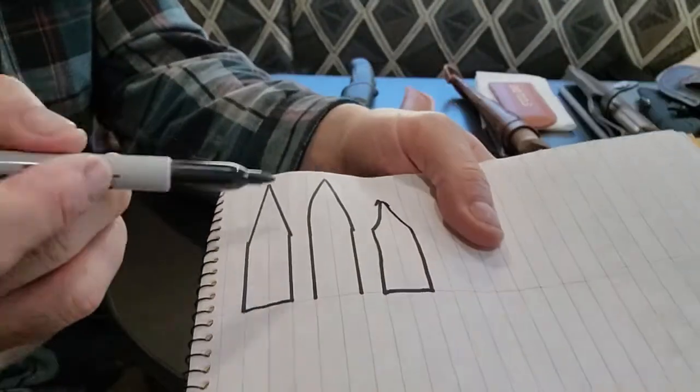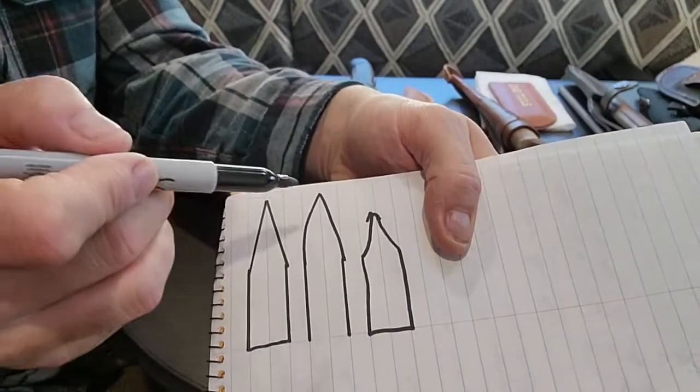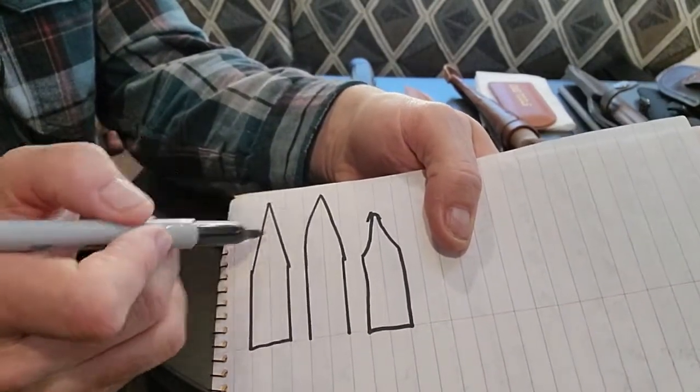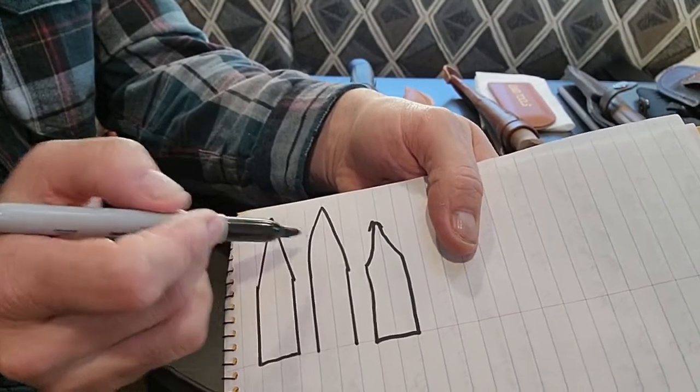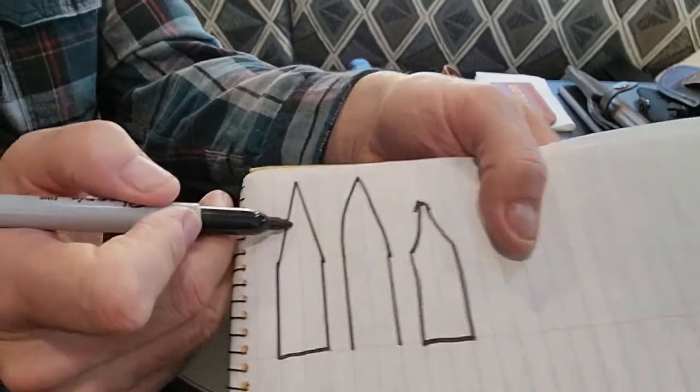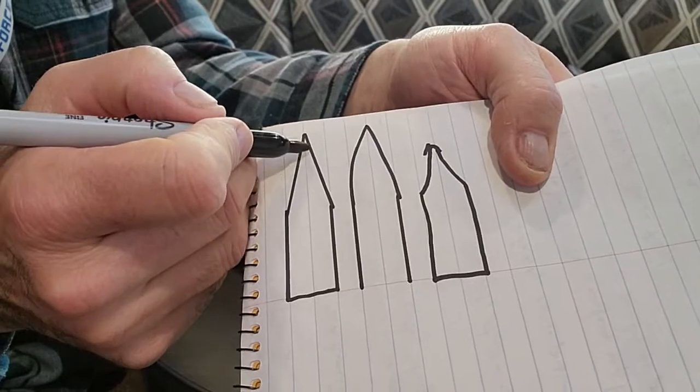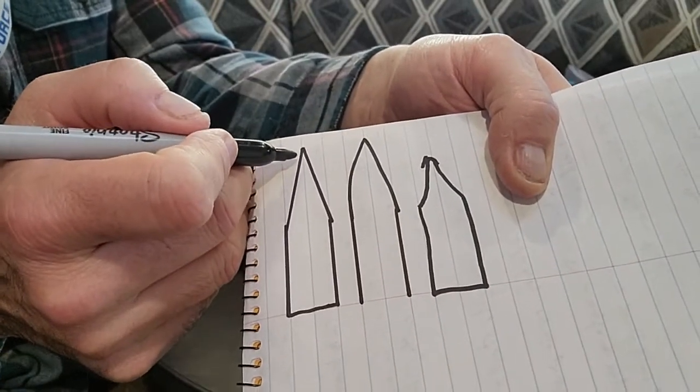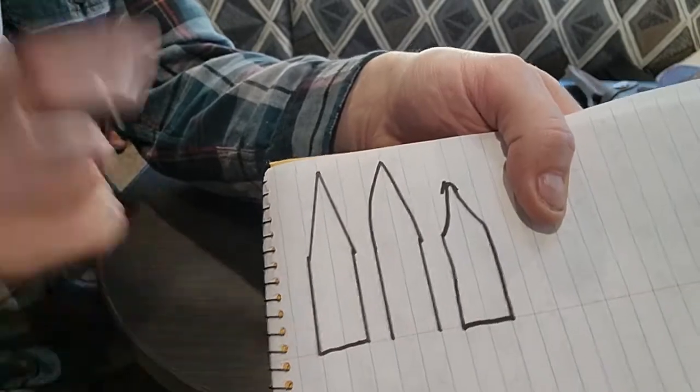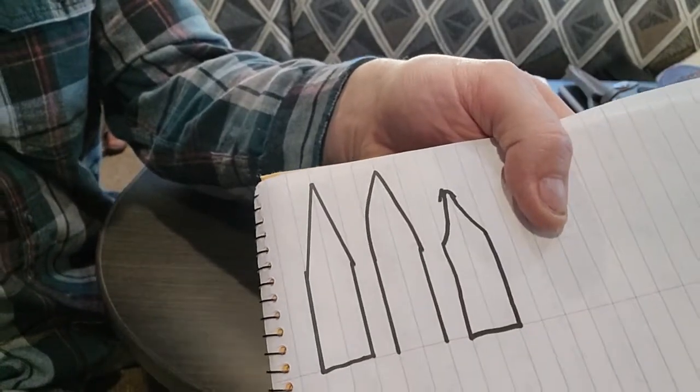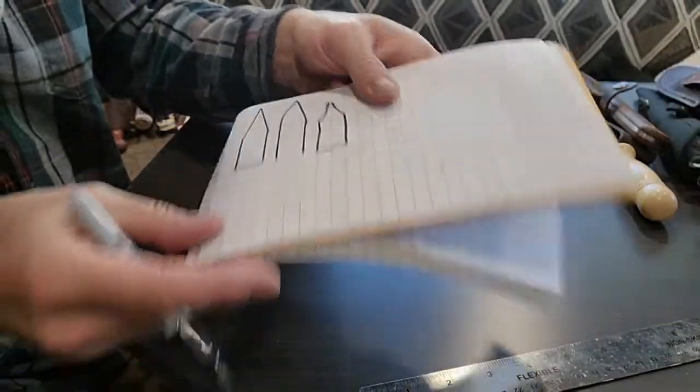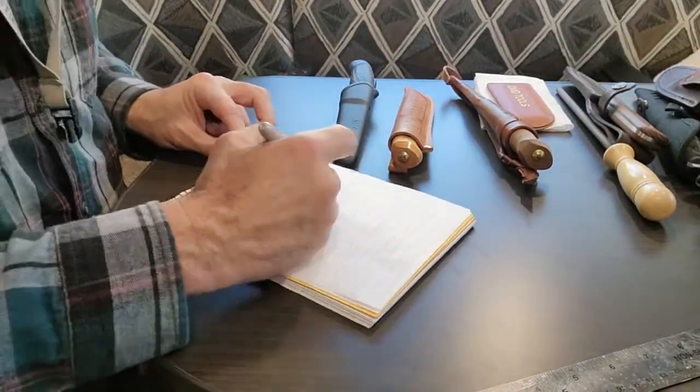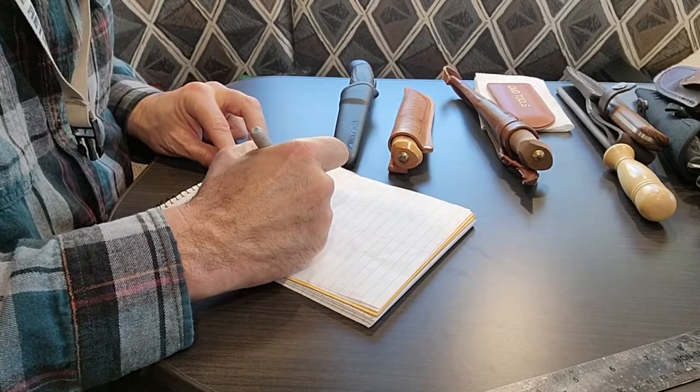The Scandi and the convex grind are the best, and even a combination of these two is called Scandi-Vex. In other words, you got a Scandi edge here but you kind of round off that bevel at the tip and it gives it a little extra strength. Excellent for making feathers.